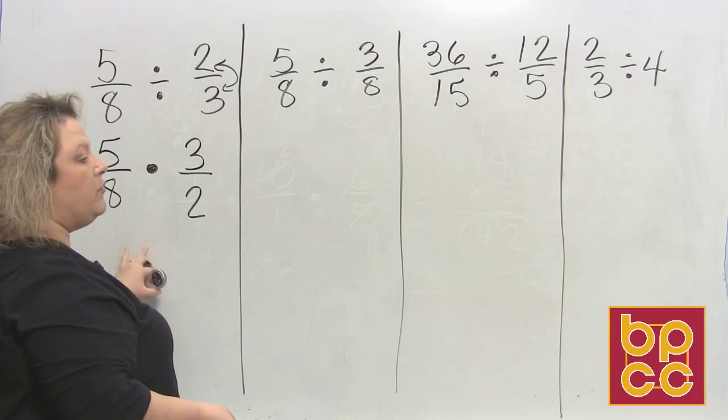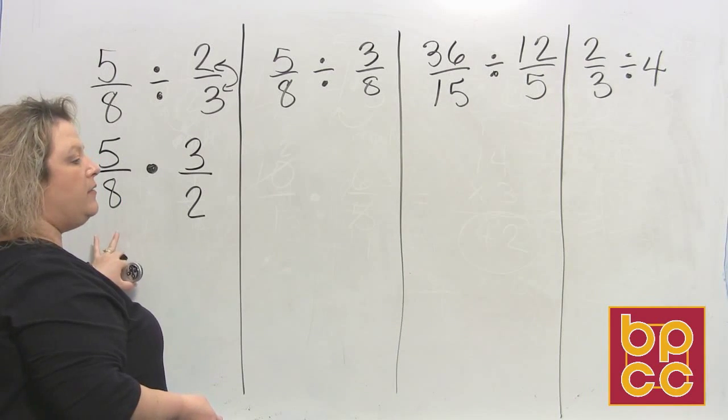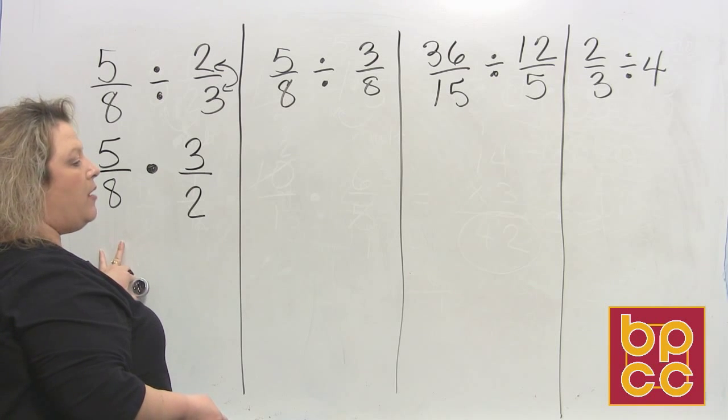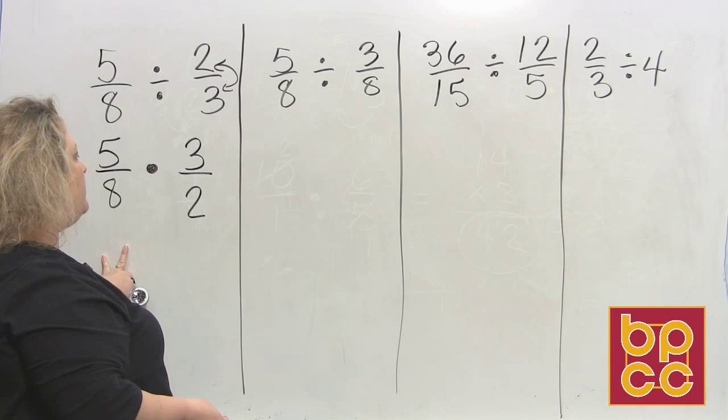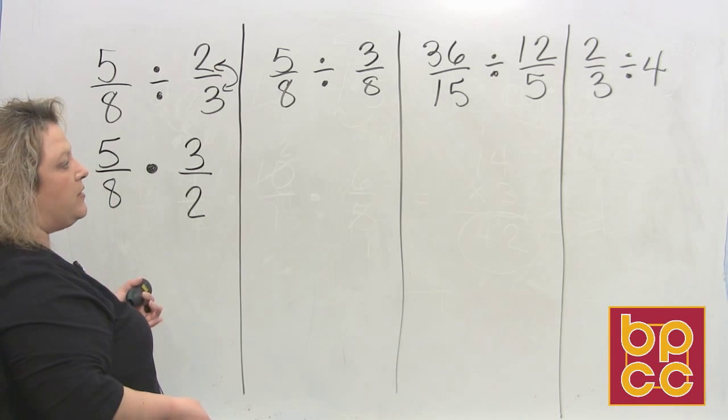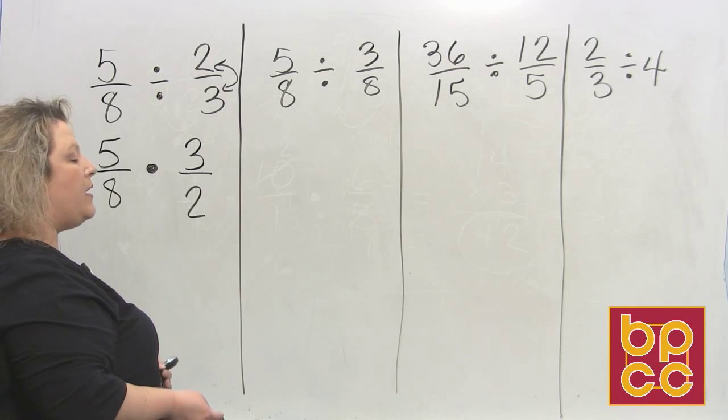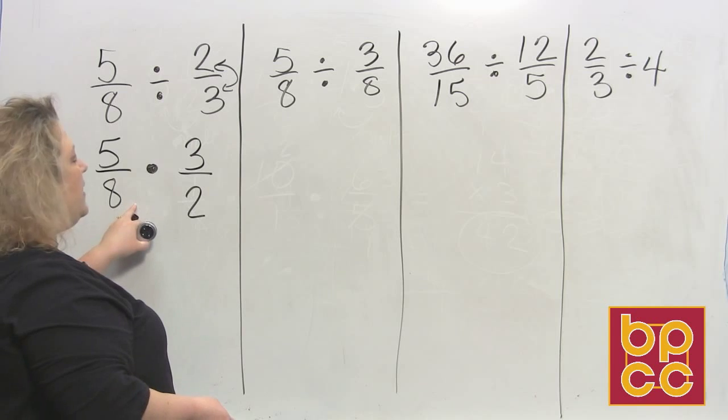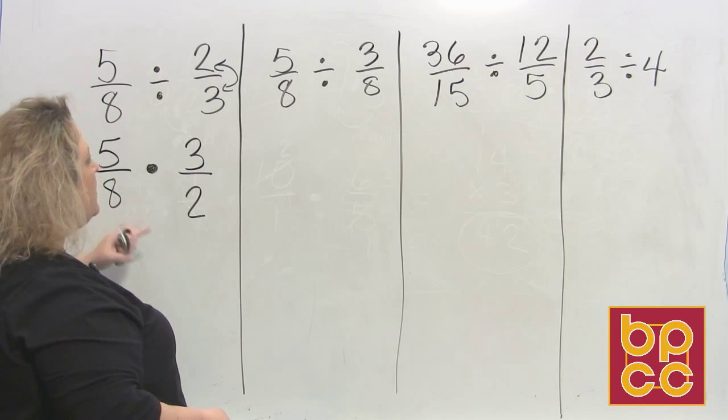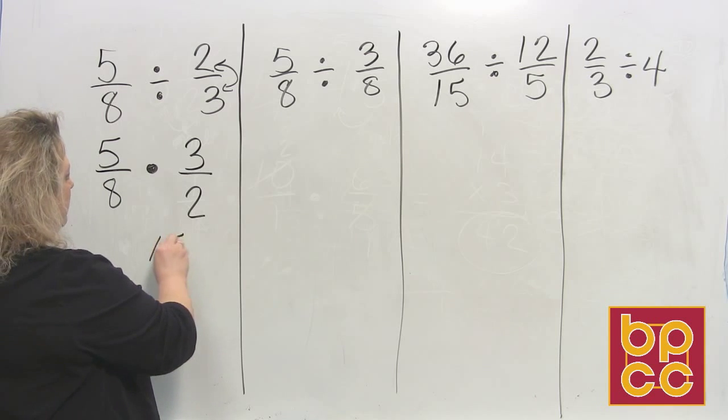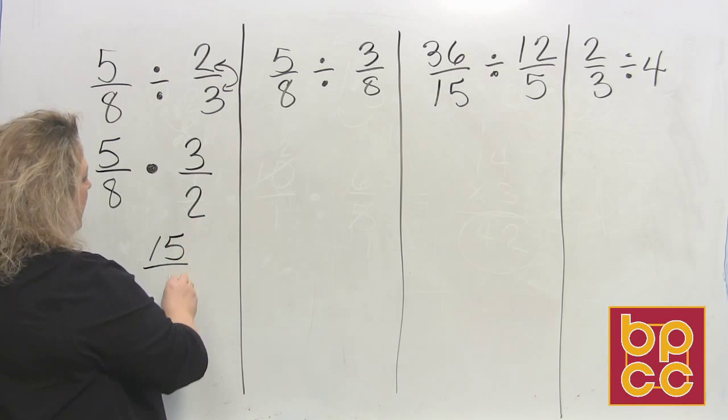And then we're going to follow the rules we just got through learning for multiplying. Multiplying fractions is no problem. Top times top and bottom times bottom. So when I look at these two fractions, you ask yourself, do they have anything in common where I can reduce them first? 5 and 2, no. 3 and 8, no. So since they have nothing in common, I can do top times top, 15. Bottom times bottom, 16.